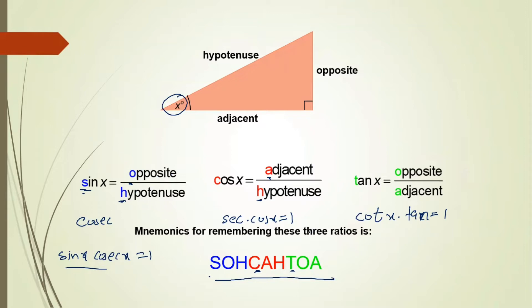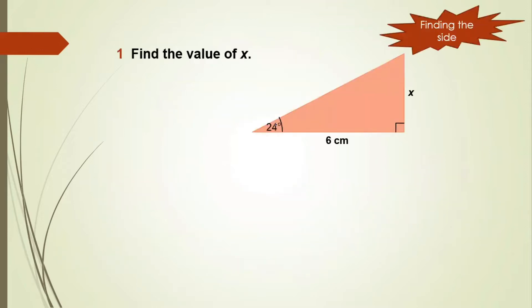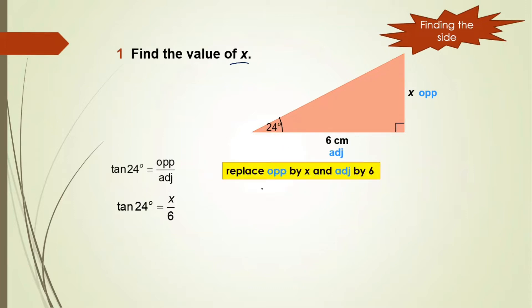In this video we learn: when two things are given, how to find the third — if you are given one angle and one side, how to find another side. Example: find the value of x, where the angle is 24 degrees and x is the side opposite to it. Since we need opposite and adjacent, we use the tan ratio. Tan 24 = opposite/adjacent = x/6.